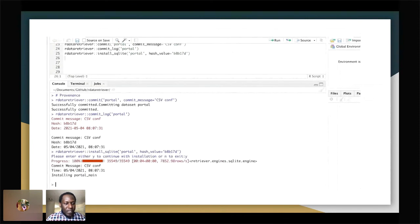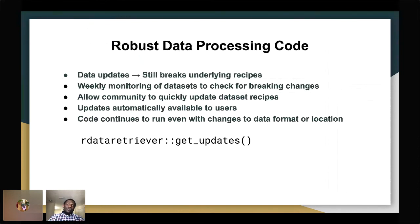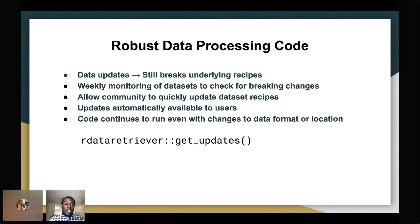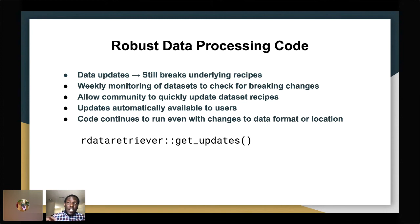Coming to the end: the R Data Retriever brings robustness to data processing. Updates always happen and can break underlying recipes, but we do weekly monitoring of datasets to check for breaking changes. Because it's a community-based platform, people can report when a dataset like Iris is breaking, and we can figure out why — maybe a version change. We keep updating so that someone who installed version 1.0 understands that 2.0 has differences due to a column change. This allows people to quickly fix issues.